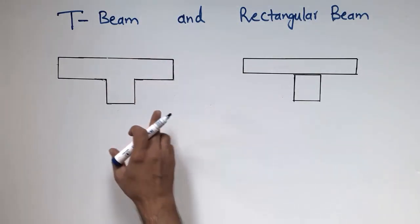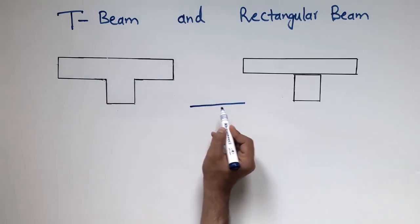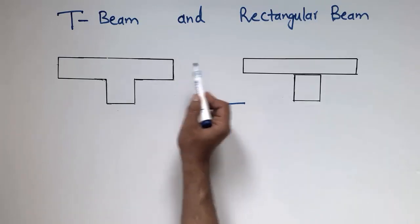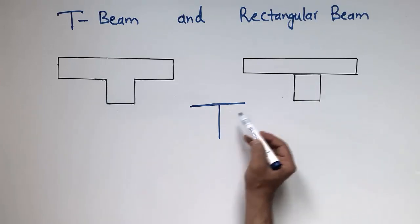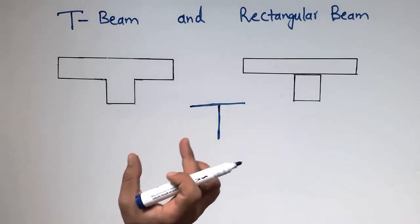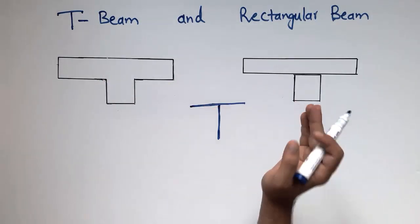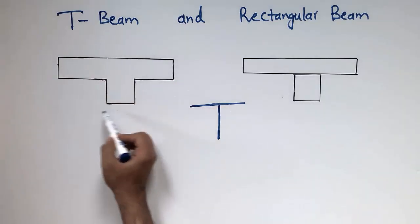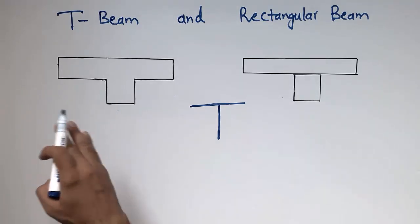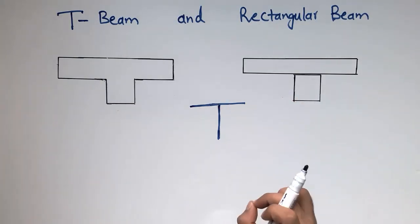Both these beams look like a T, as you can see here. The top part is the flange — just like the T alphabet — and we have a flange in both cases as well as a web. So these two types of beams look like T, but their behavior and analysis differentiate them into two categories: one is called the T-beam and one is called the rectangular beam. Both beams look like T, but the difference is in their analysis and design.